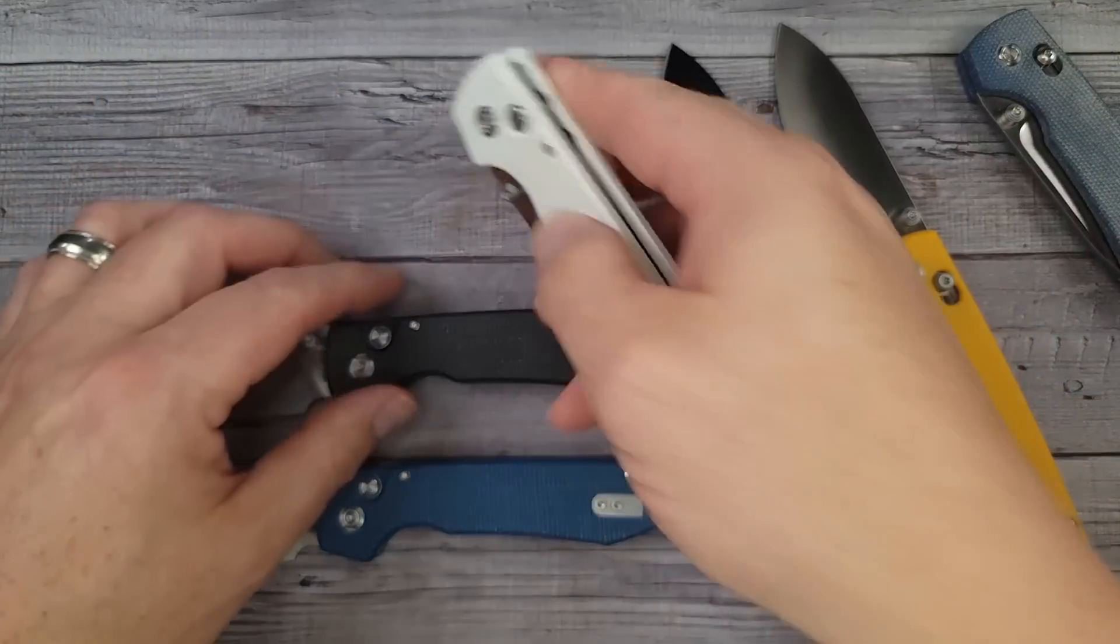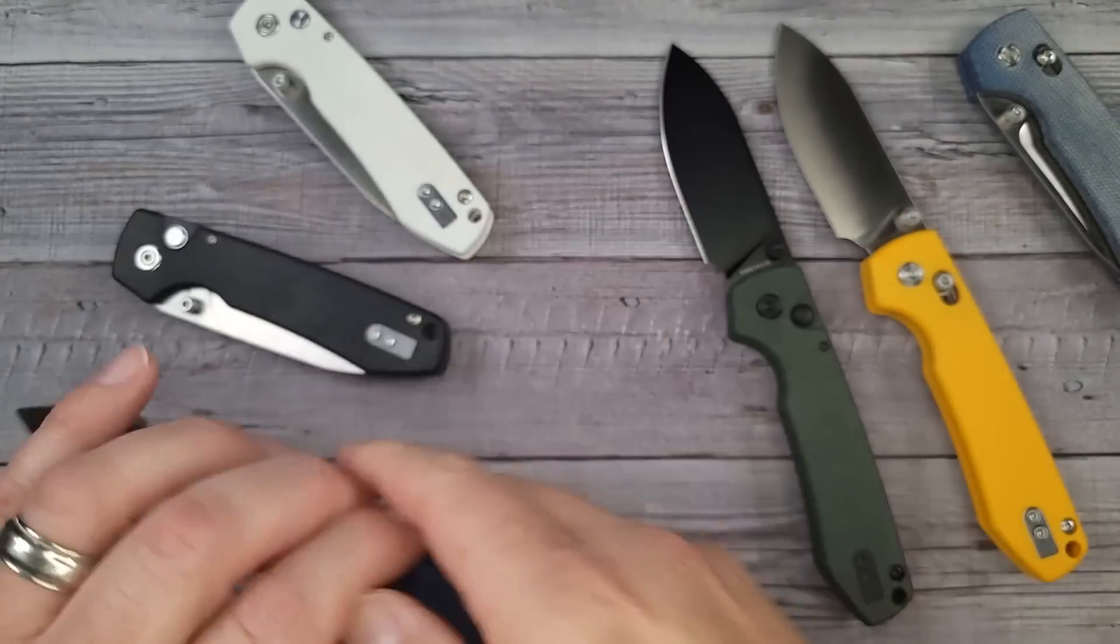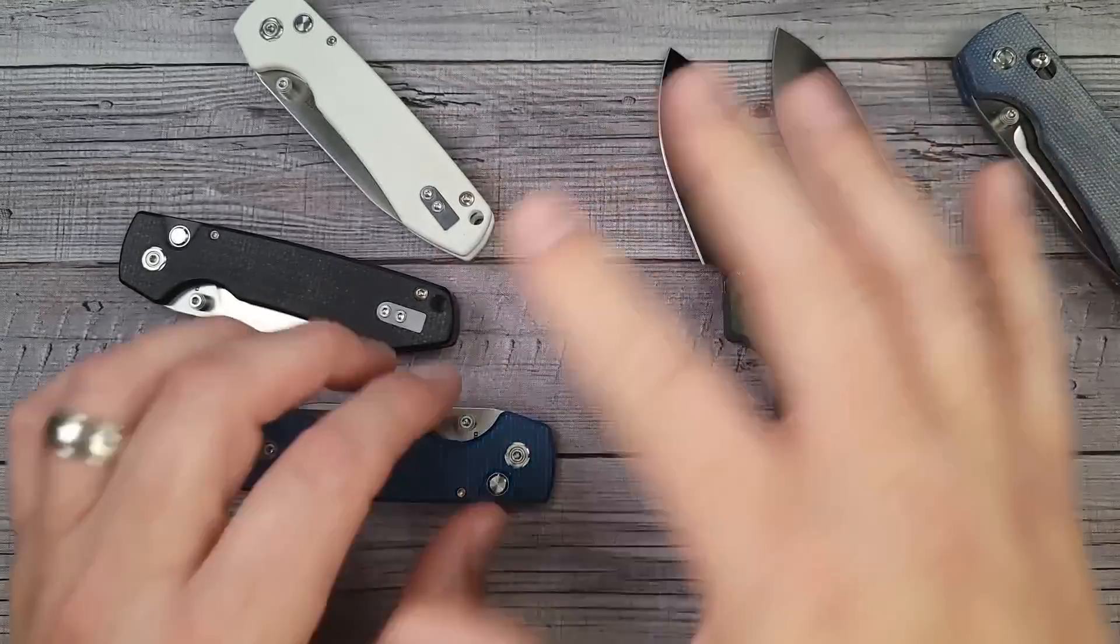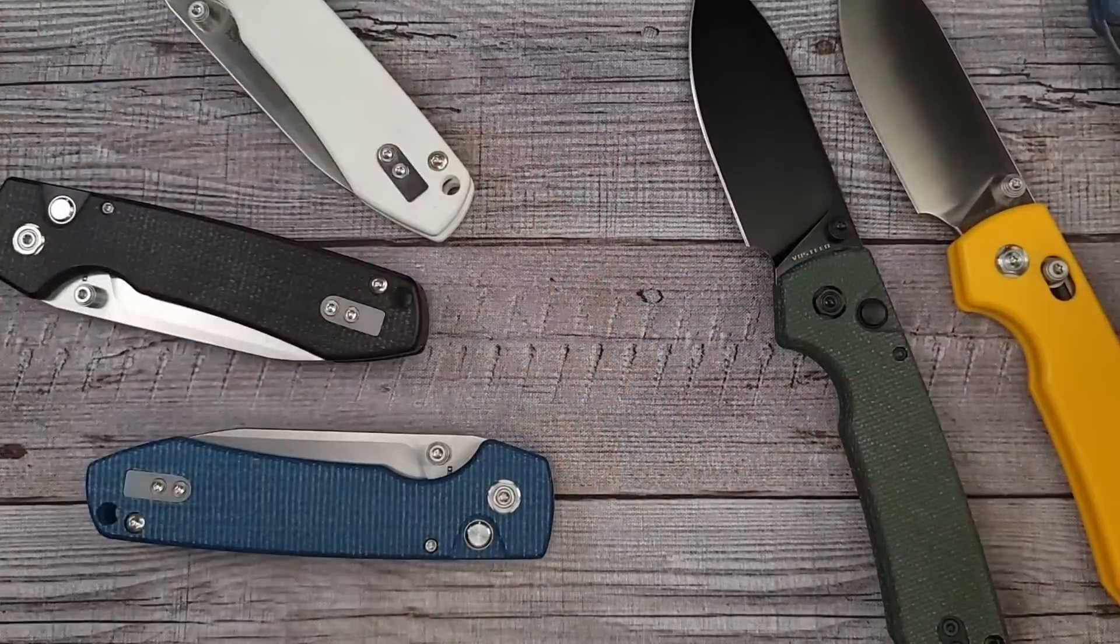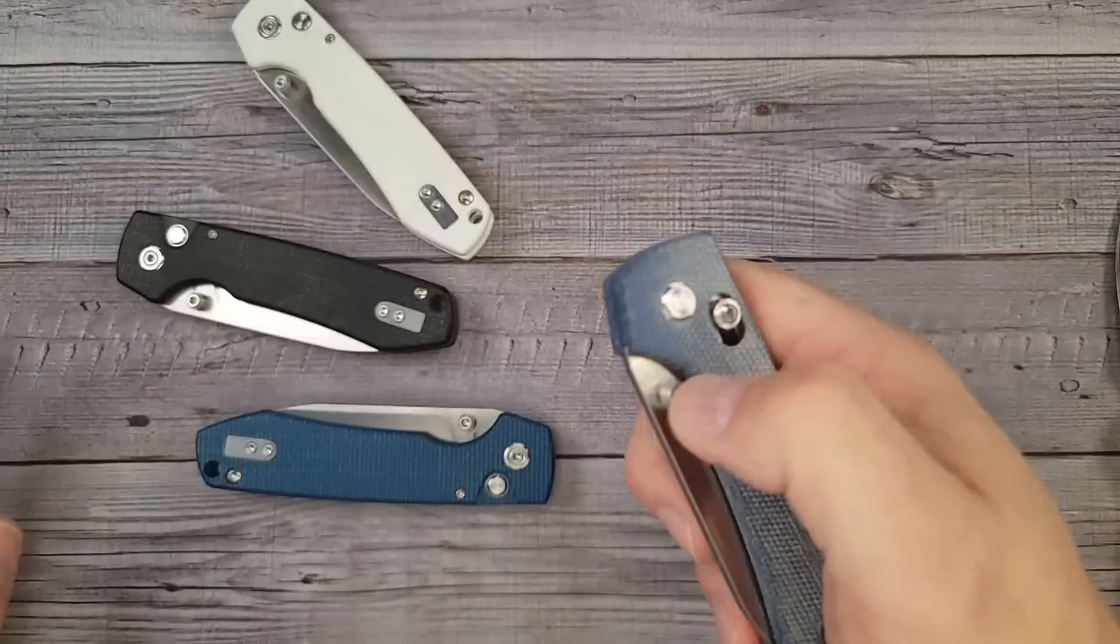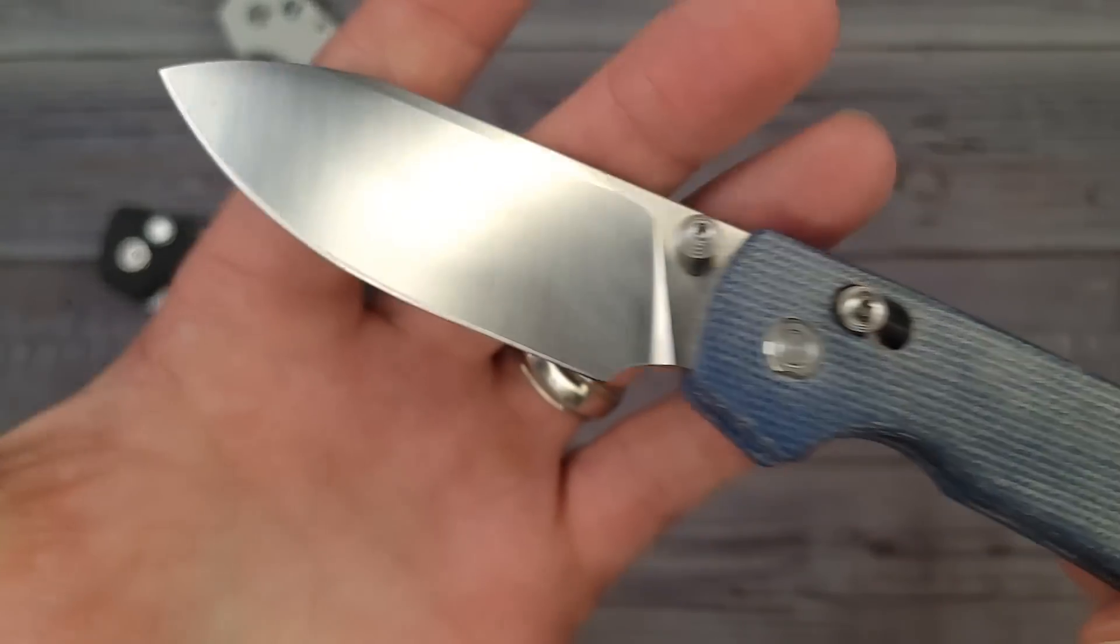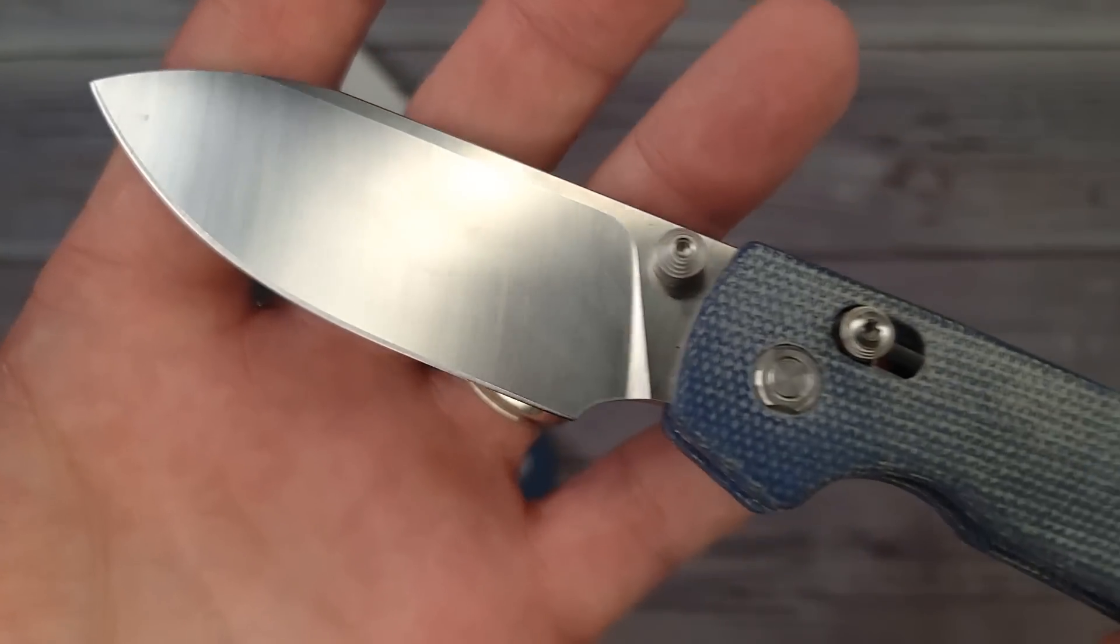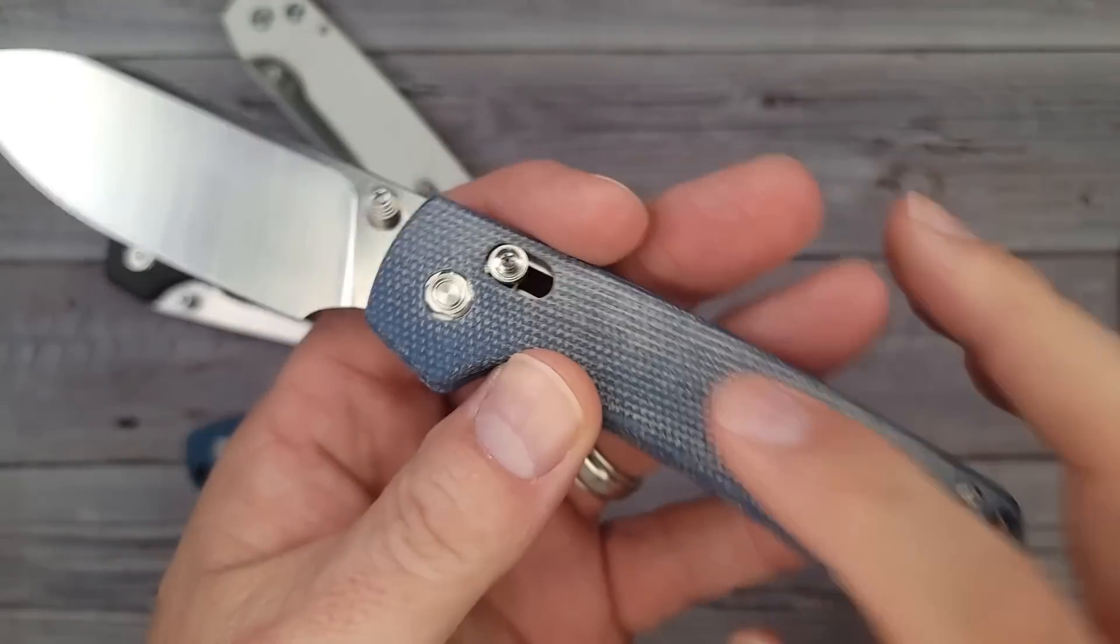They have button locks, they have crossbar locks. This is just a sample - they have 12 different varieties, different blade types, stonewashed and satin. Here's a look at the crossbar lock, getting up in here. This thing is super lightweight. This one right here is the micarta version.